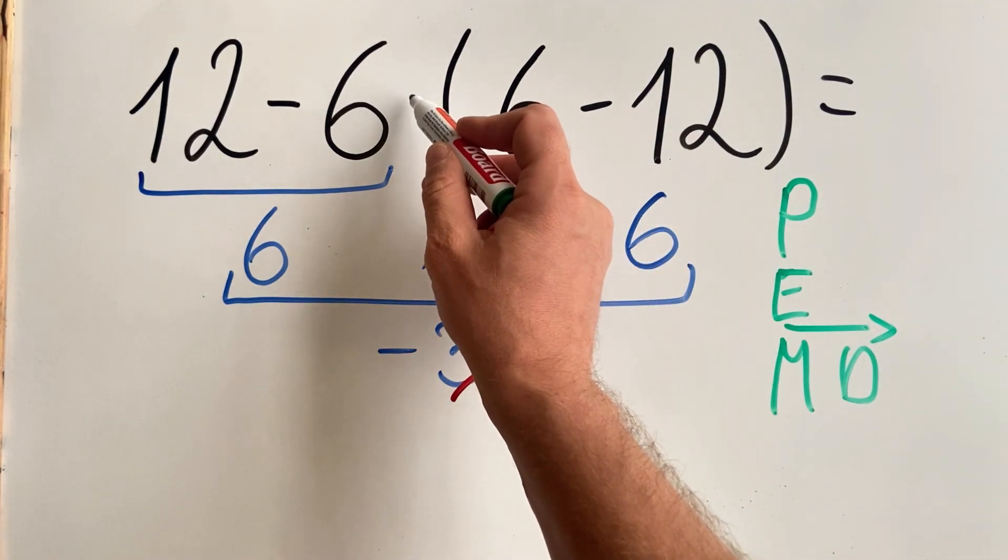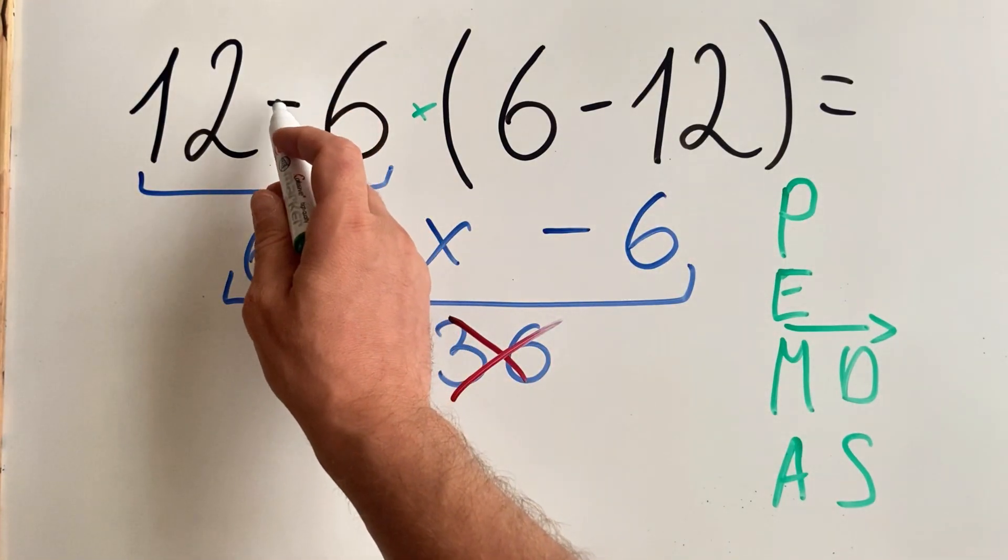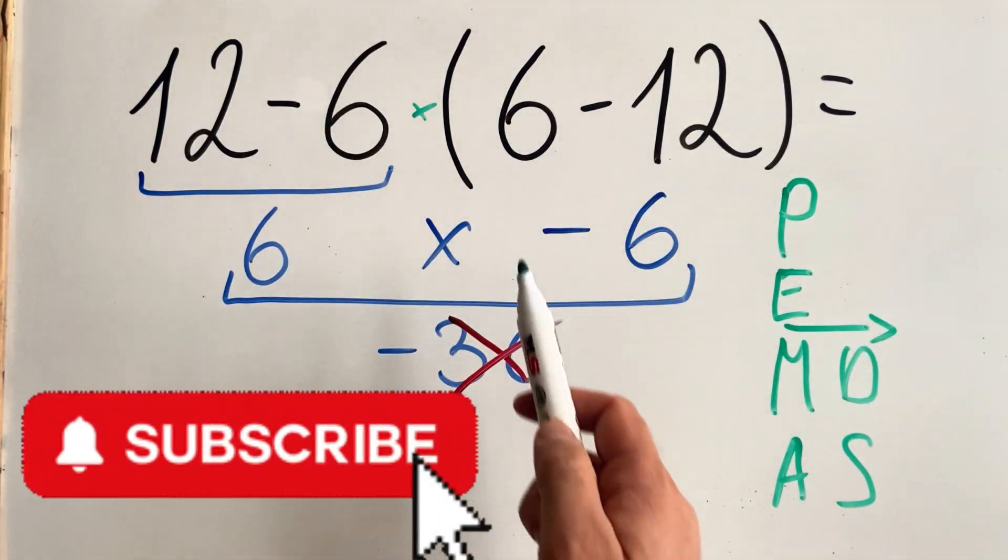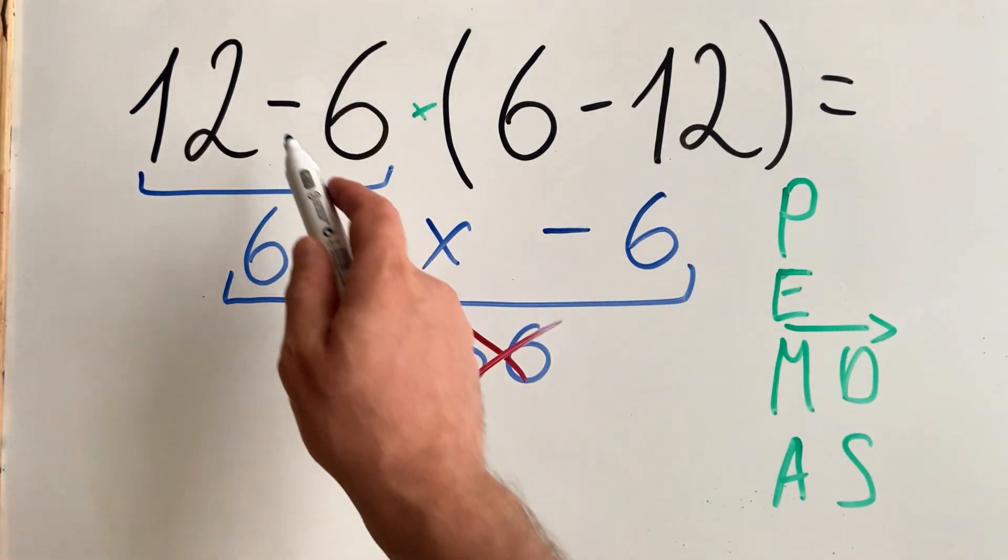In this case we have multiplication. Then we do addition and subtraction. So the last operation will be subtraction. Therefore first you do inside the parentheses, then you multiply, and then you do the subtraction.